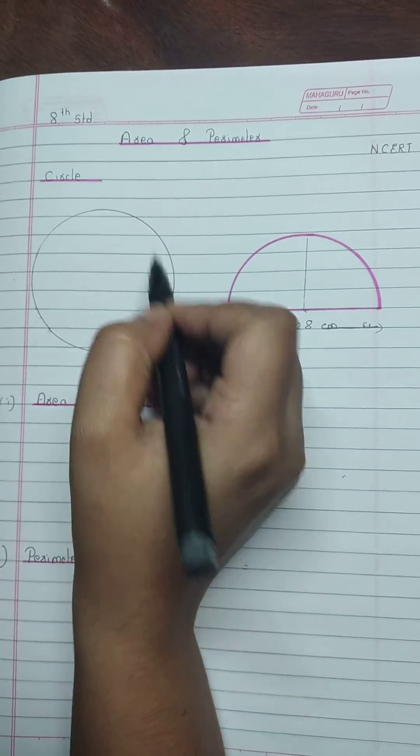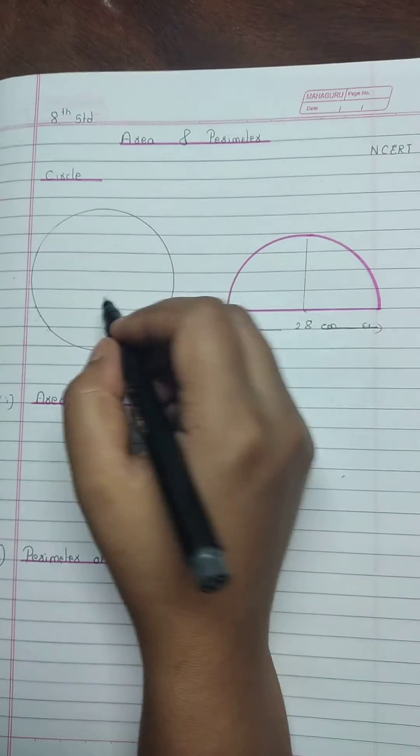This is a circle. A semicircle is half of a circle.